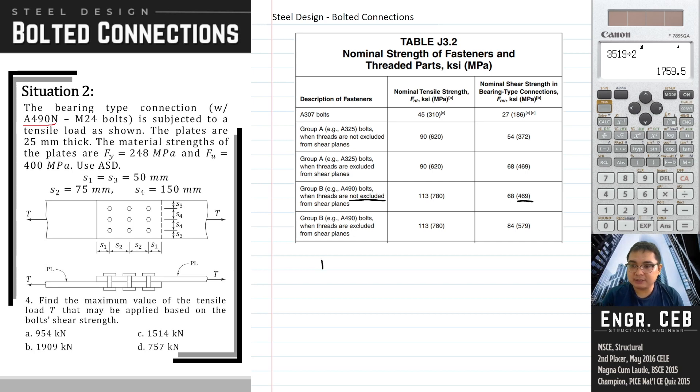Let's say we analyze the upper plate. Upon analyzing the upper plate, we can observe that the bolts are subjected to single shear, meaning only one area of the bolt is resisting the force.